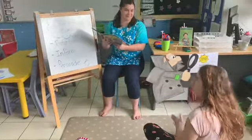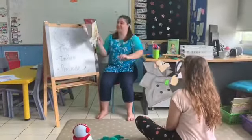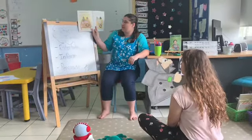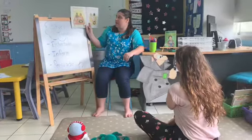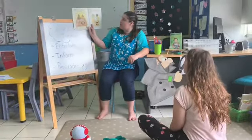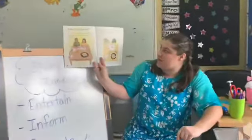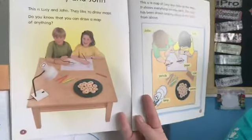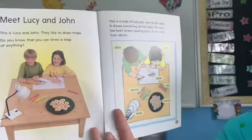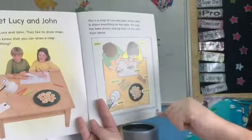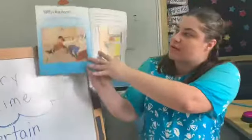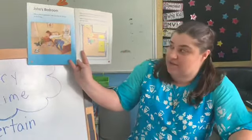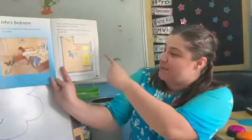Meet Lucy and John. They like to draw maps. Did you know that you can draw a map of anything? This is a map of Lucy and John at the table. It shows everything on the table. The map has been drawn looking down at the table from above, so it shows them and all the stuff on the table.